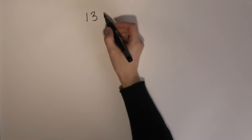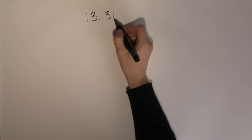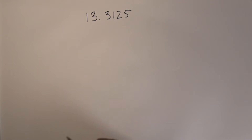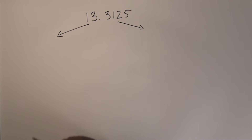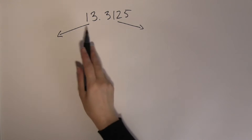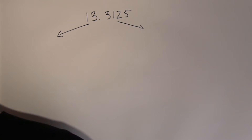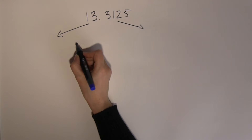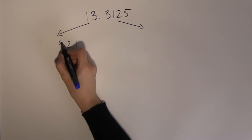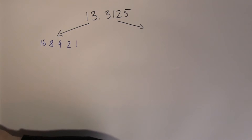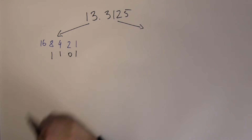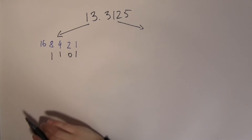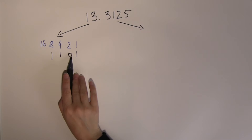So let's look at an example. What happens if you need to convert 13.3125 into binary? From here on I am going to split the number and convert the whole number and the fraction part separately. For the whole number 13, we use the normal way — the place value table: 1, 2, 4, 8, 16. What combination of these makes up 13? Well, 8 plus 4 makes 12, plus 1 makes 13. So the whole part is 1101.